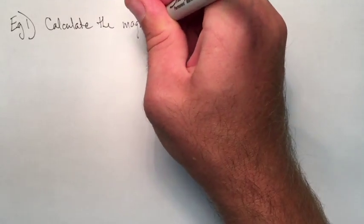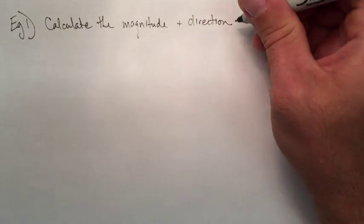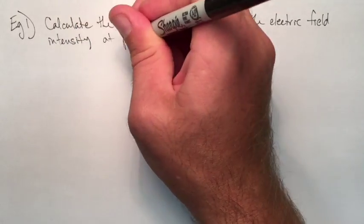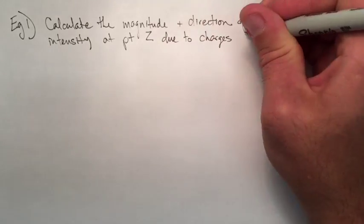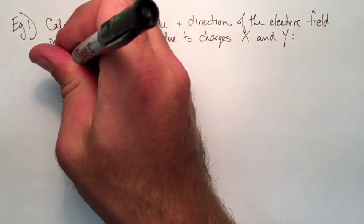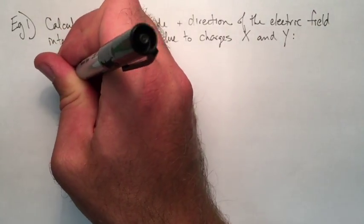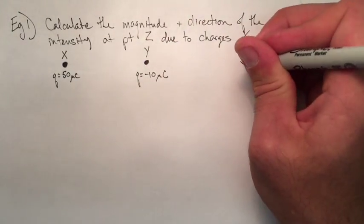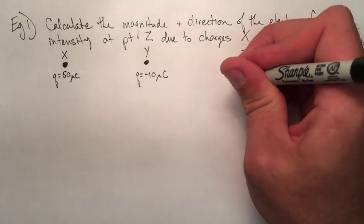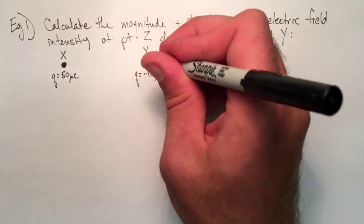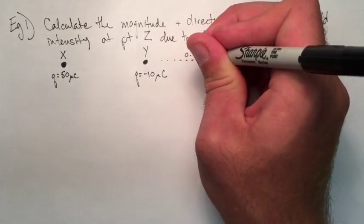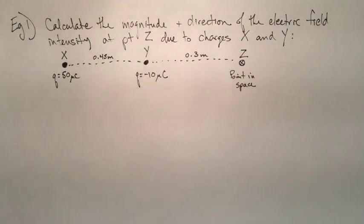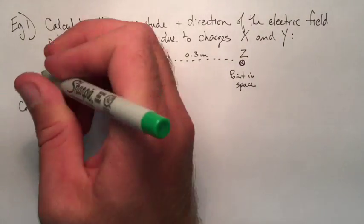So this is the example from the notes. We're going to calculate a magnitude and direction of an electric field intensity at some point z, due to two charges, which we'll call charge x and charge y. So again, this is something where we can imagine if we were to place a particle at point z, what types of forces would it feel due to x and due to y? So x here is going to be some charged object, 50 microcoulombs, and y is going to be some charged object, negative 10 microcoulombs. So what's z going to feel because of those two charges? The distances between them, x and y have a distance of 0.45 meters, and y and z is 0.3 meters.